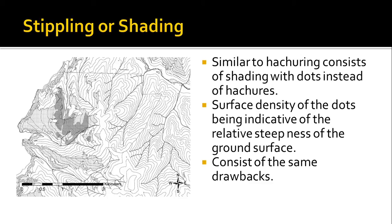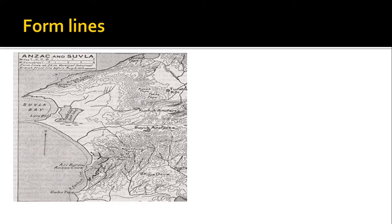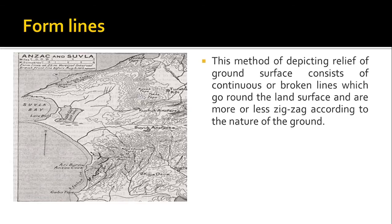And this is the next method called form lines, in which continuous lines were used to show the surface zigzag irregularities. A continuous line will show the elevation or the relief of the ground surface.